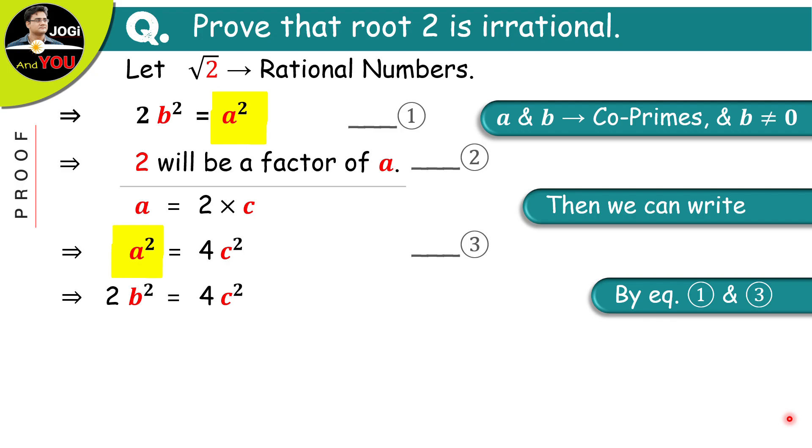After dividing both the sides by 2, we get b square is equal to 2c square.